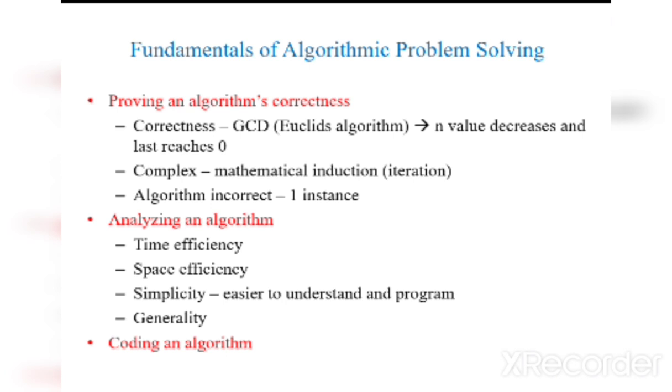The next step is analyzing an algorithm. At last, we have to analyze whether our program or algorithm is time efficient, space efficient, simple, and general. Time efficiency is related to the time complexity—what is the time it takes to complete the execution of the whole program. Space efficiency is related to the space complexity—the space occupied by the program in the memory. Third, it must be simpler, that is easier to understand and program. Fourth is generality.